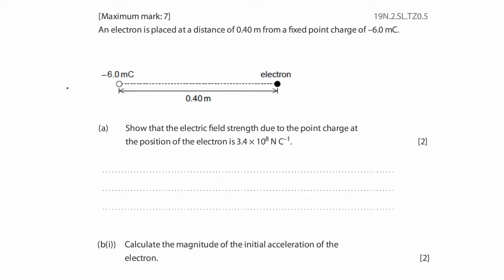An electron is placed at a distance of 0.4 meters from a fixed point charge of negative 6 millicoulombs. Here is a diagram and part A says, show that the electric field strength due to the point charge at the position of the electron is 3.4 × 10^8 newton per coulomb.